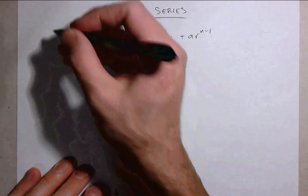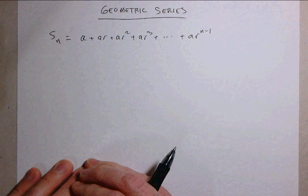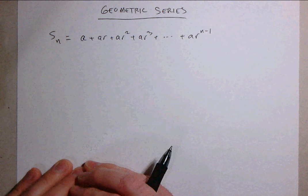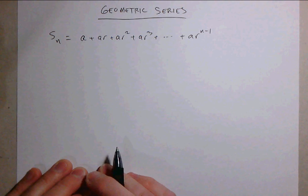But there are n terms here and so we're going to call this s sub n for the sum of the first n terms. And we're going to come up with a beautiful formula for s sub n, a closed form formula that doesn't involve ellipses like this.